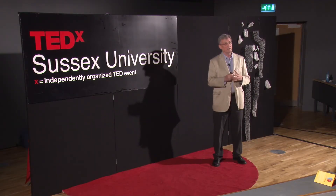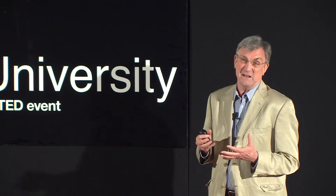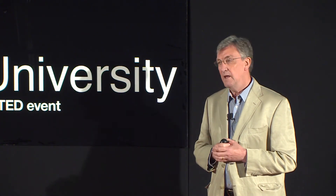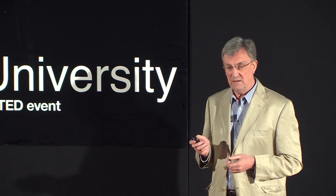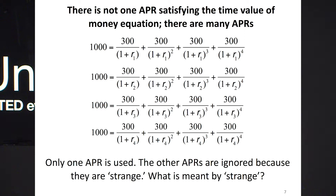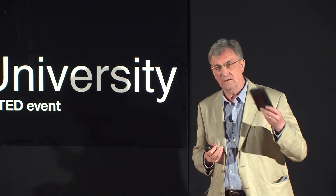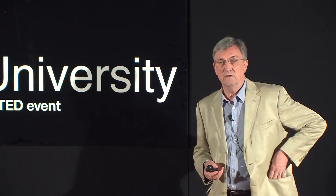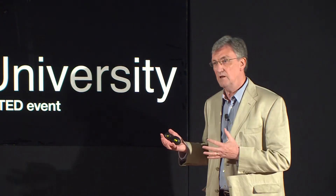Some years ago, I found myself outside of the academic world and didn't have to publish. That meant I could do some blue sky research and ask questions where it didn't matter if I didn't find the answer for years. The question I asked concerned this problem: there is not one APR solving that equation — there are actually N APRs, the number of time periods in the equation. We only use one of them. If I ask my calculator to calculate that rate of interest, it gives me one. It's programmed to give me one, but not the others.